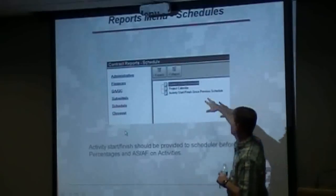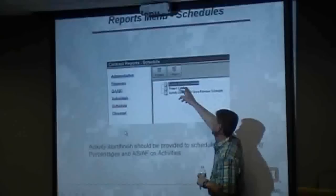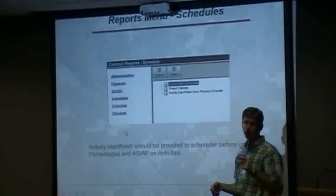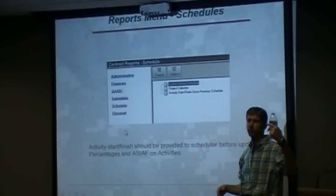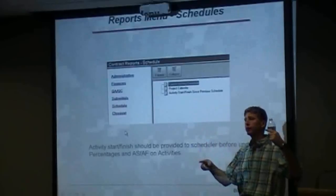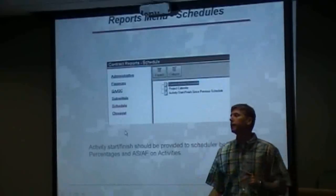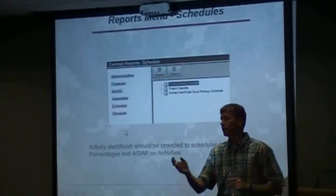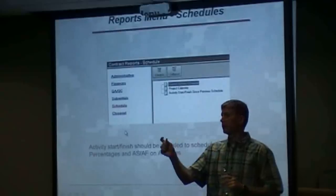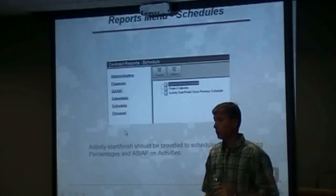The next one here is the scheduled one — current activity schedule, project calendar. The project calendar is a really pretty cool calendar. It starts at day zero and you can look down the line, and then any day of the contract it will tell you what calendar day of your contract you're on.